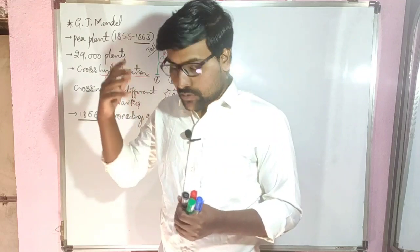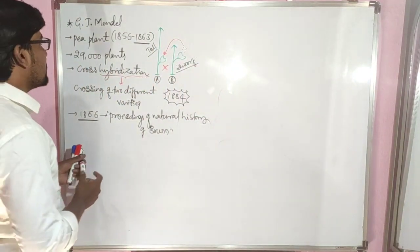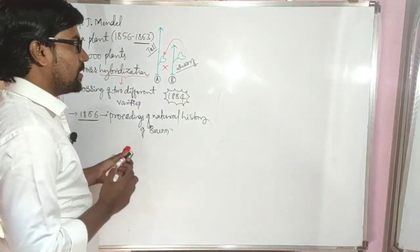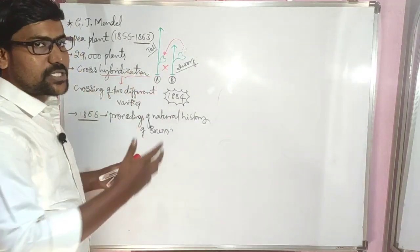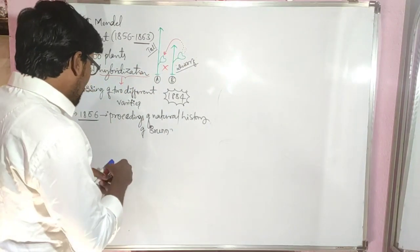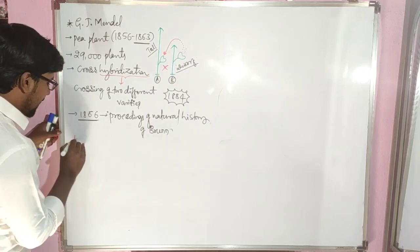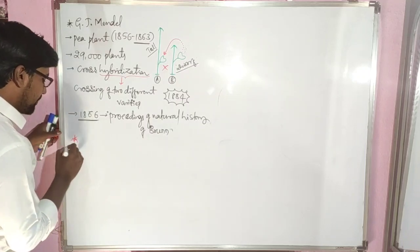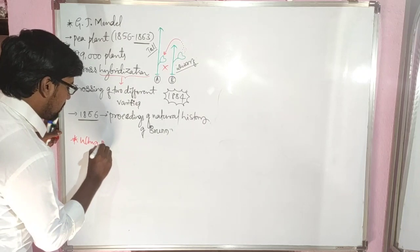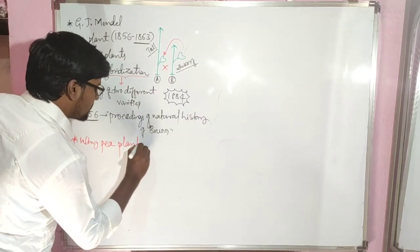Mendel started his cross hybridization experiments on the pea plant. Now the question arises: why did Mendel select only the pea plant?